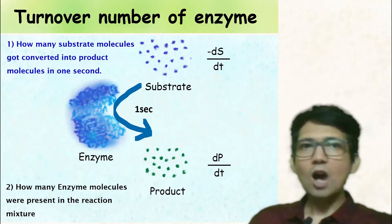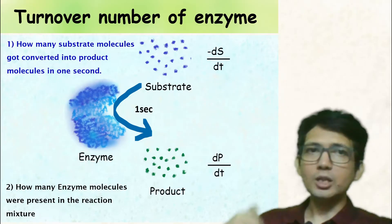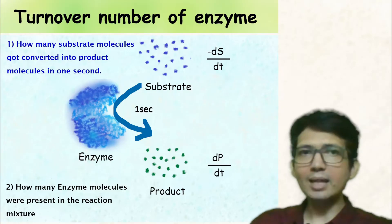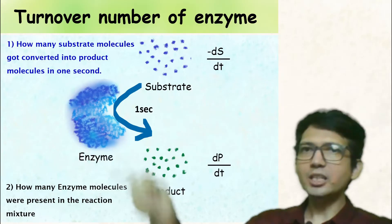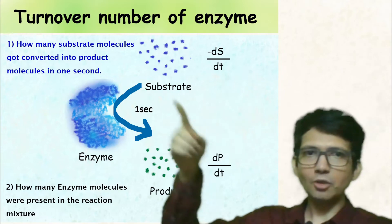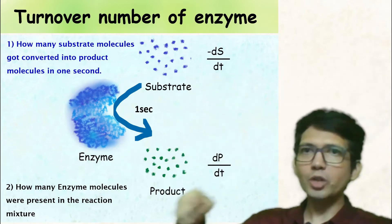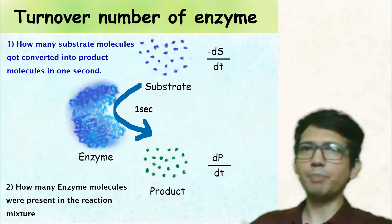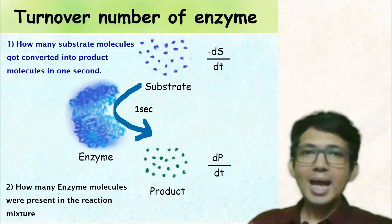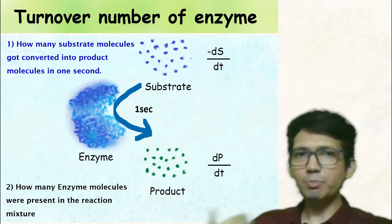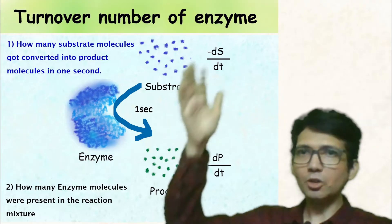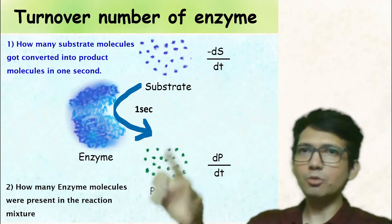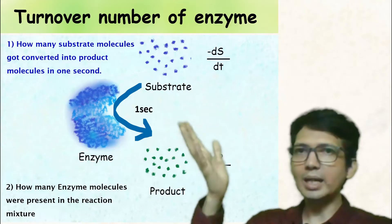To find how many substrate molecules got converted into product molecules in one second, we need to find the change in concentration of substrate or product with respect to time. As the enzyme-catalyzed reaction proceeds, the concentration of substrate will decrease whereas the concentration of product will increase.